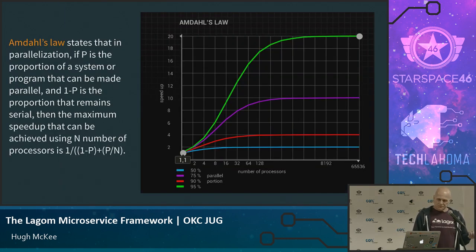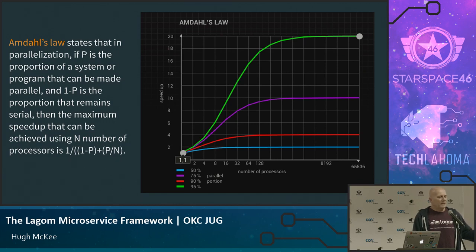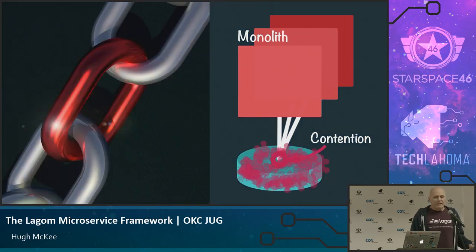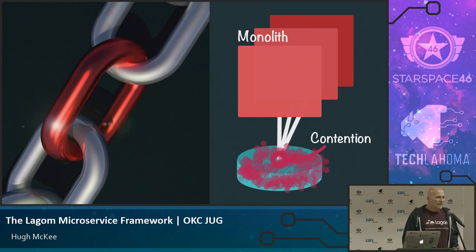It really comes down to Amdahl's Law: you can only make a system go so fast, and it's based on the amount of parallelism you can put into the system. The things that inhibit parallelism are points of contention — I'm picking on the database here, but often that's the choke point. It can only go so fast depending on what database technology you're using. The other thing is a single point of failure — these are the production outages where you get called in and have to fix things.